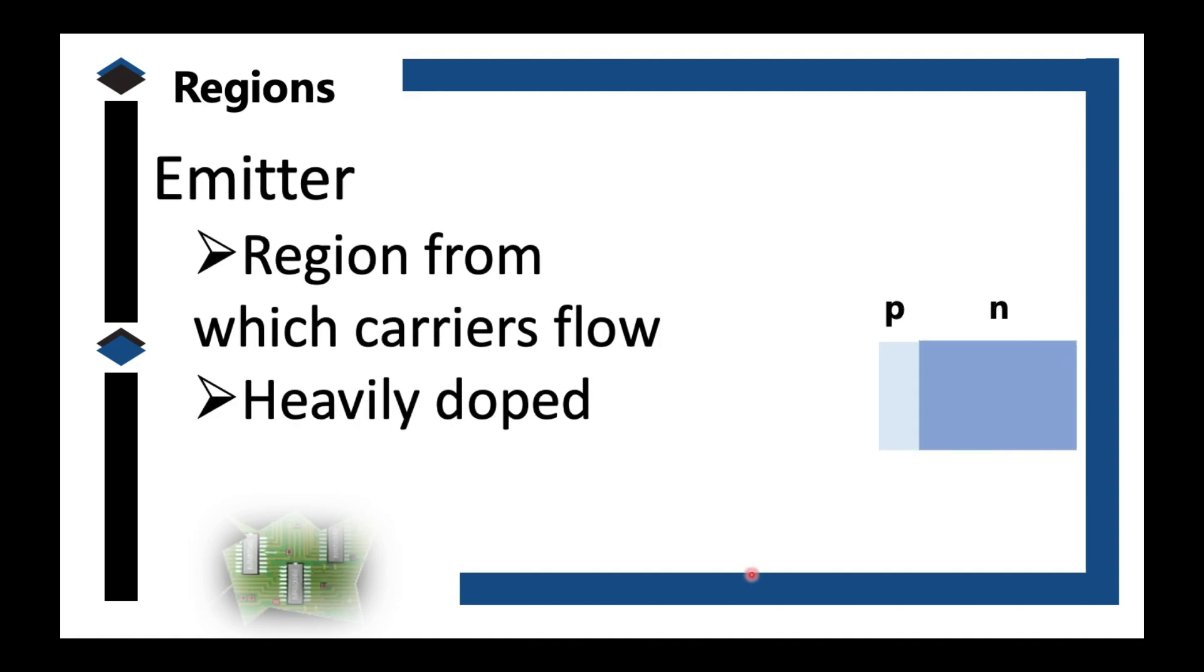Next layer, we have the emitter region. The emitter region, as clearly depicted in this picture, it is the darkest in our color gradient. It's the darkest because it is heavily doped. Because it is heavily doped, and from the name itself emitter, it emits our charges. This is where they come from.